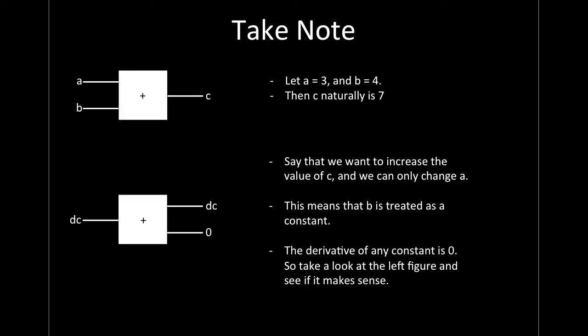Let's take a concrete example with one of these nodes — the addition node. A and B are inputs, C is the output. A is 3, B is 4, so C is 7. This is the basis of how a feed-forward neural network works. Now say we want to increase the value of C.